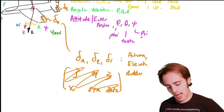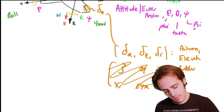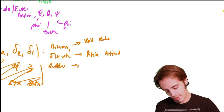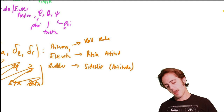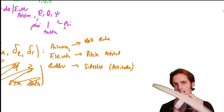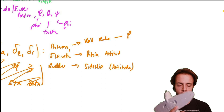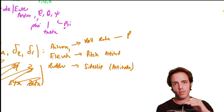The ailerons provide a roll rate. The elevator gives a pitch attitude — it changes the moment, which causes the aircraft to trim at a new angle of attack. The rudder provides a side slip — a constant offset to the flight speed vector and the aircraft heading. Those are the moment coefficients we're going to use for this course.